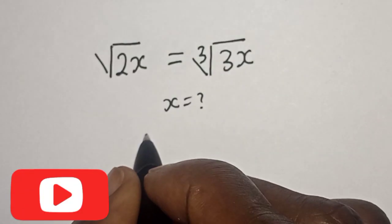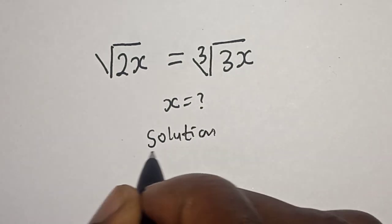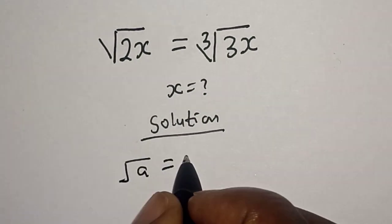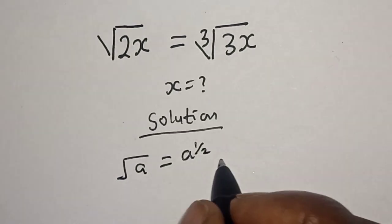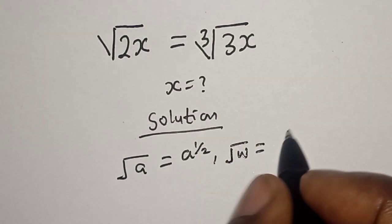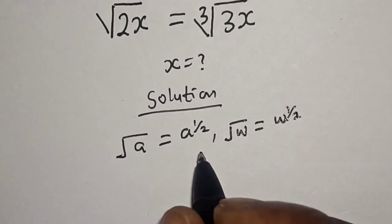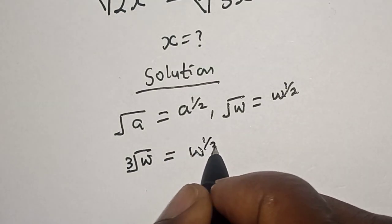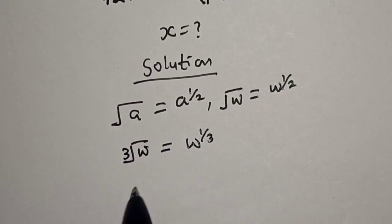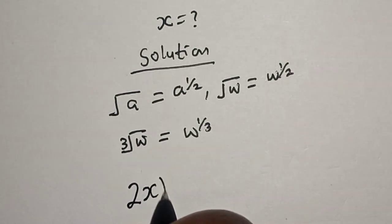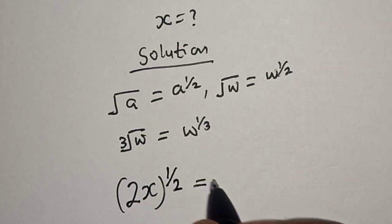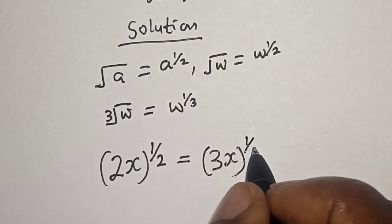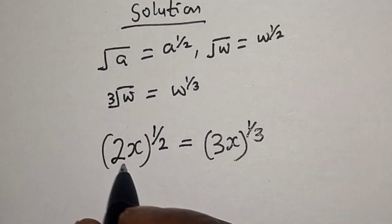Before we proceed, please don't forget to like, share, comment, and subscribe. Solution: remember, if you have root of a, this is equal to a raised to power 1 over 2. Similarly, cube root of w is equal to w raised to power 1 over 3. Therefore, square root of 2x can be written as 2x raised to power 1 over 2, and cube root of 3x can be written as 3x raised to power 1 over 3.